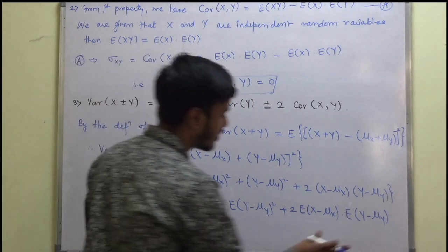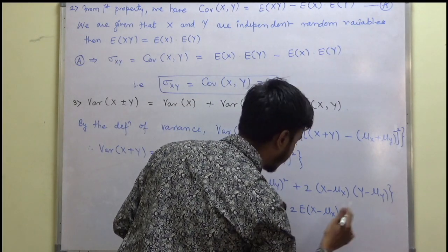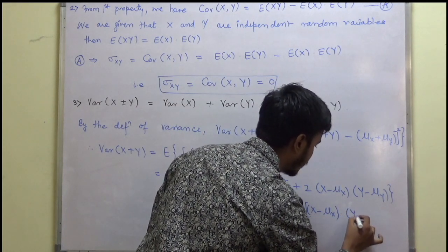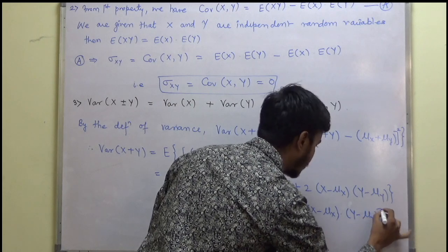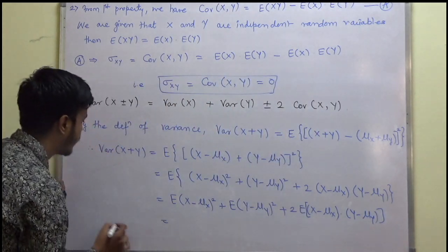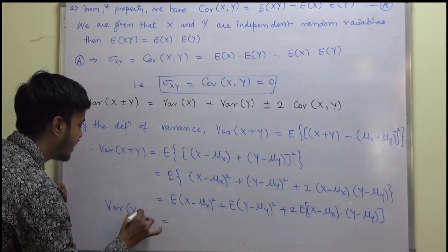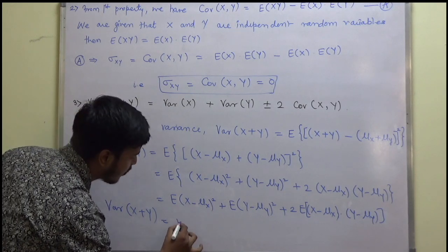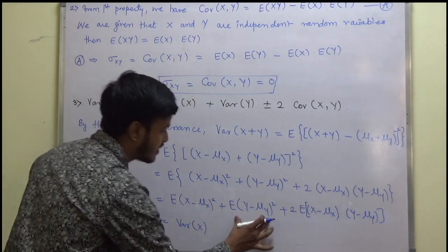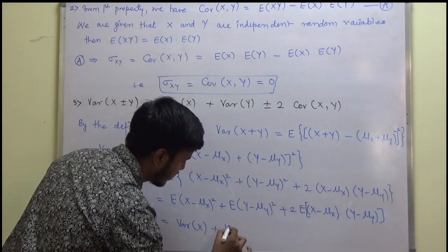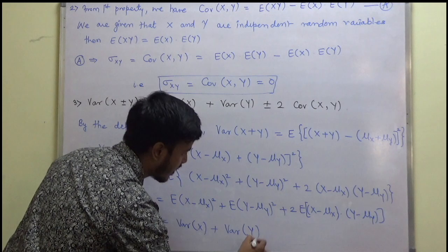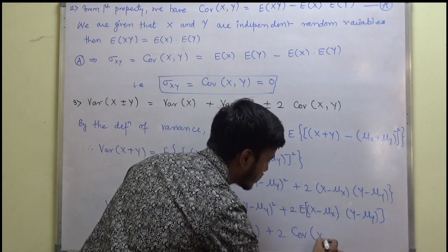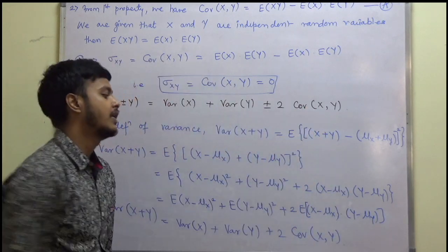Now applying the expectation to each term: the first term, by definition, is variance of x. The second term, by definition, is variance of y. The third term, two times expectation of (x minus μx)(y minus μy), by definition is two times covariance of xy. So variance of (x + y) equals variance of x plus variance of y plus two times covariance of xy.